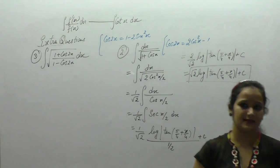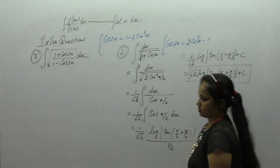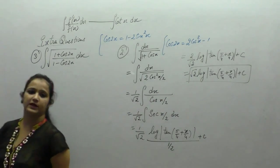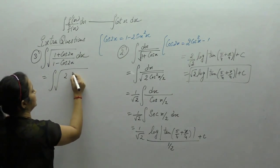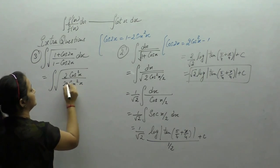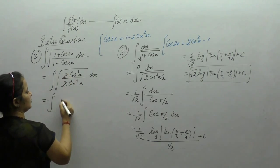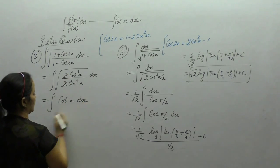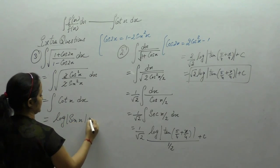Next question: Integral of square root of (1 + cos 2x) upon (1 minus cos 2x). We know 1 plus cos 2x equals 2 cos² x and 1 minus cos 2x equals 2 sin² x. So the expression becomes square root of (2 cos² x upon 2 sin² x). The square and square root cancel, leaving cos upon sin, which is cot x. The integral of cot x is log|sin x| + c.